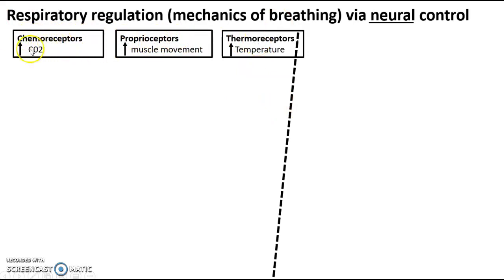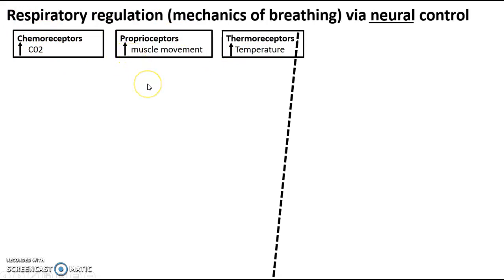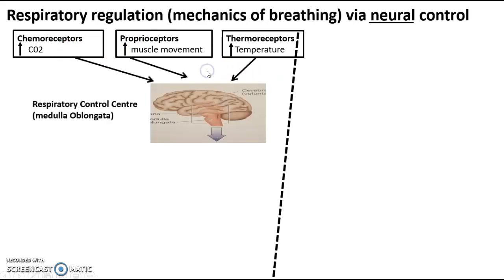Chemoreceptors detect an increase in carbon dioxide and a decrease in oxygen. Proprioceptors detect an increase in muscle movement, and then we've got thermoreceptors that detect an increase in blood and muscle temperature. Now once we start exercising, our receptors detect an increase in these things. Remember, a change is not enough — we've got to say it's increased to put it in exercise context. These three receptors detect this information, and it is then sent into a new control centre.